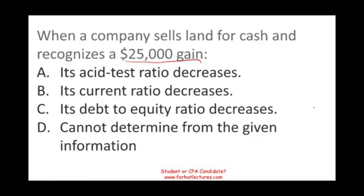I'm going to illustrate this in every question. Answer A says the acid-test ratio will decrease; answer B says the current ratio will decrease. If you know anything about those two ratios, they're very similar to each other. If something happened to the current ratio and it goes down, most likely the acid-test ratio will go down too. So if A is a possible answer, B should be a possible answer, and vice versa.